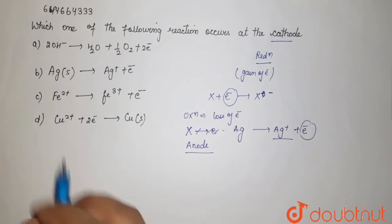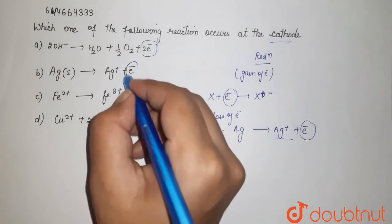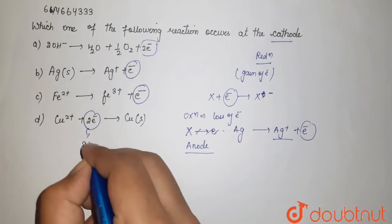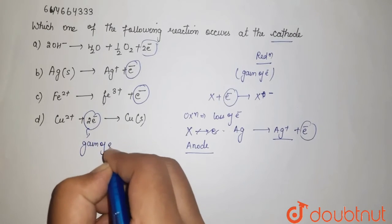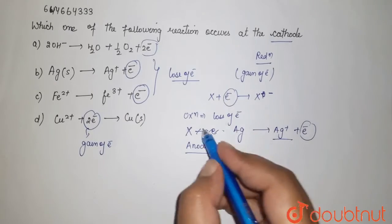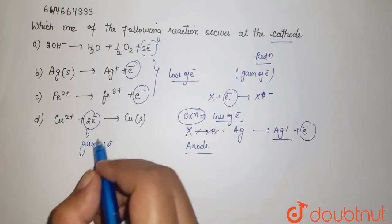If you see this reaction here, loss of electron, here it is gaining of electron, here it is gain of electron. Here in these three reactions there is loss of electron, and loss of electron is considered to be oxidation.